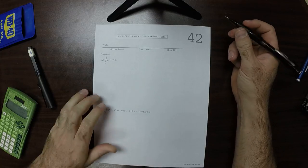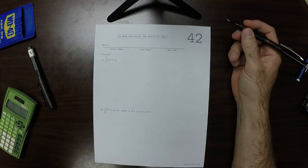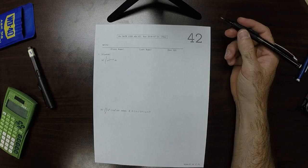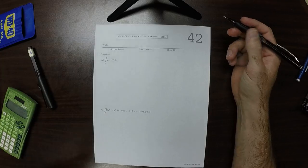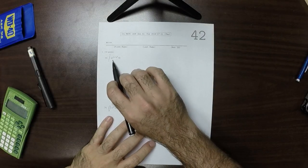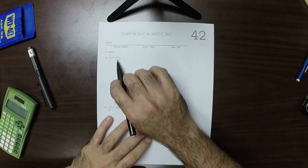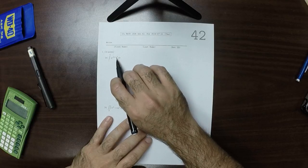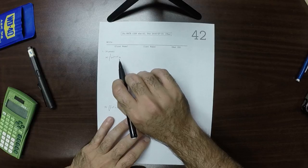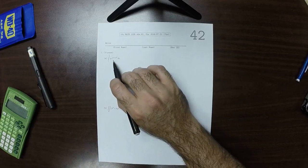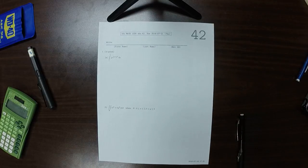This is the solution to written homework 42. So the first exercise is an integral. We're integrating an expression with respect to x, and this expression depends on x and y. Because we're integrating with respect to x, that means that the y's are constant.